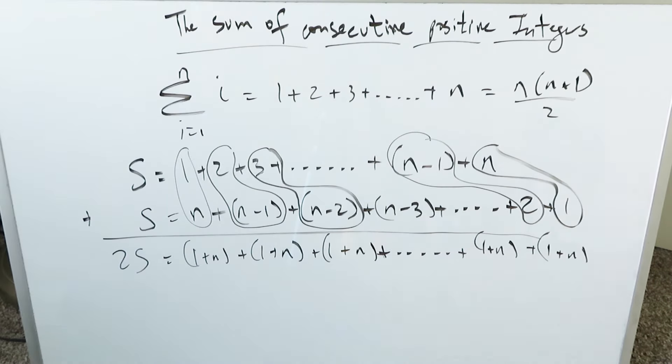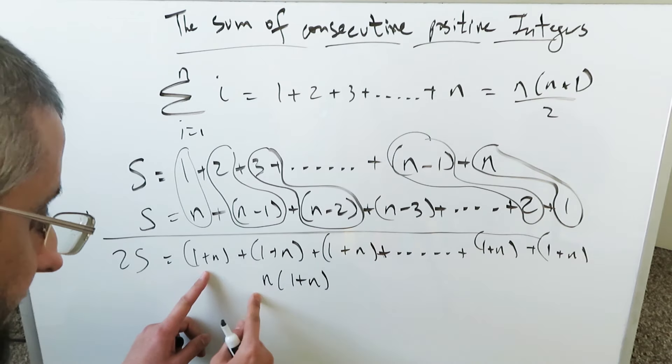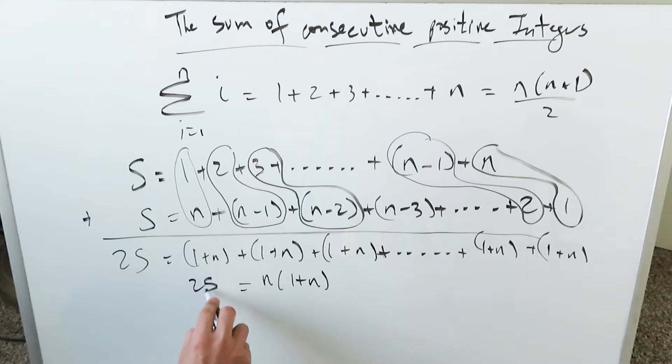However many numbers we went to, in terms of our count, we have n times 1 plus n. That's what we have. We have 1 plus n, but we have n number of those 1 plus ns, which you algebraically write as: that is equal to 2S.